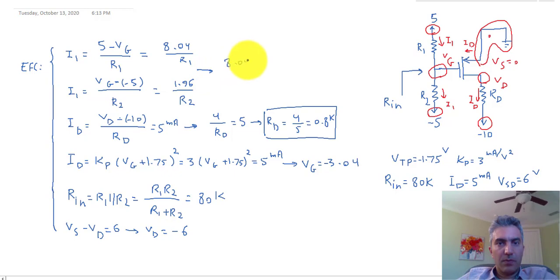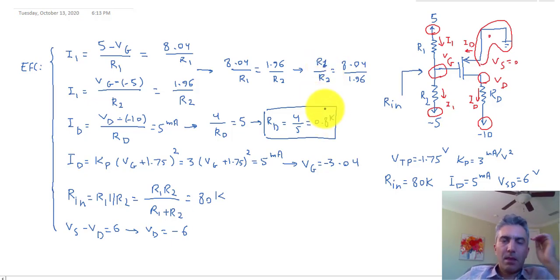And these two are equal to each other. So 8.04 divided by R1 is equal to 1.96 divided by R2. So you actually do have R1 over R2 being equal to 8.04 divided by 1.96. So R1 is equal to 6, that's R1.